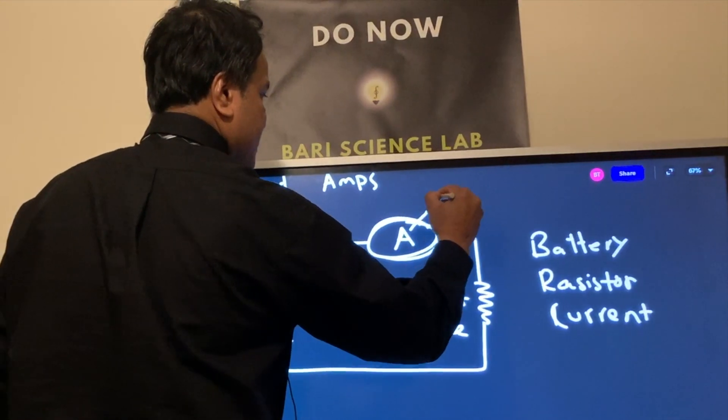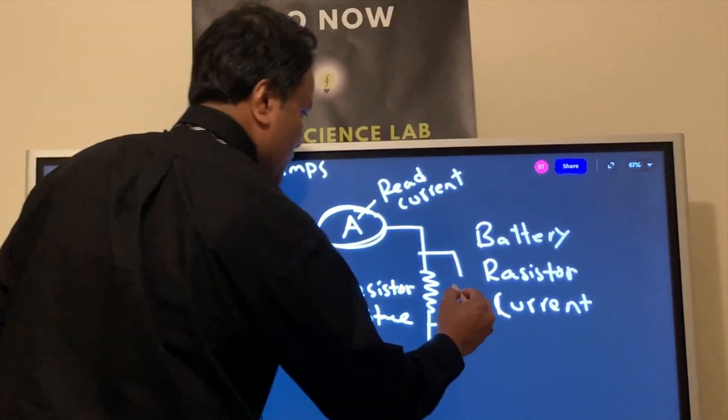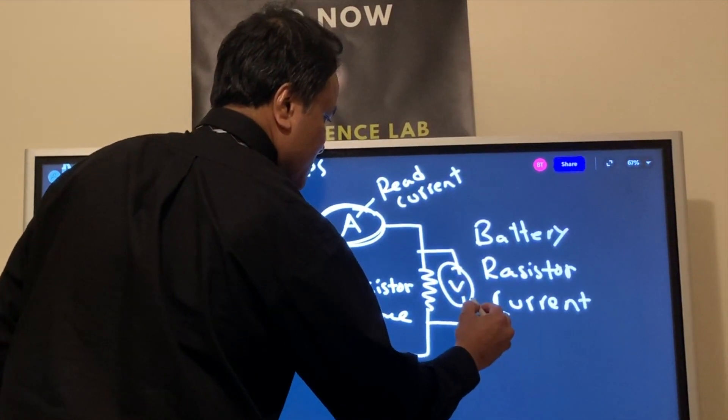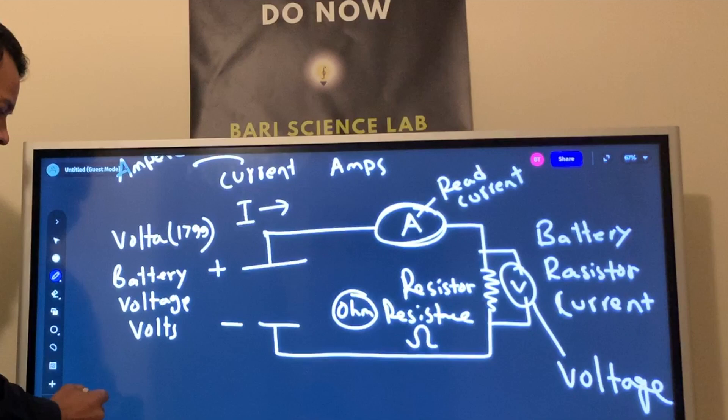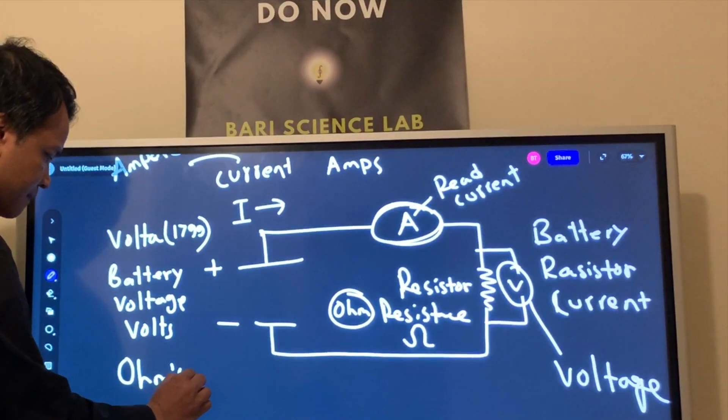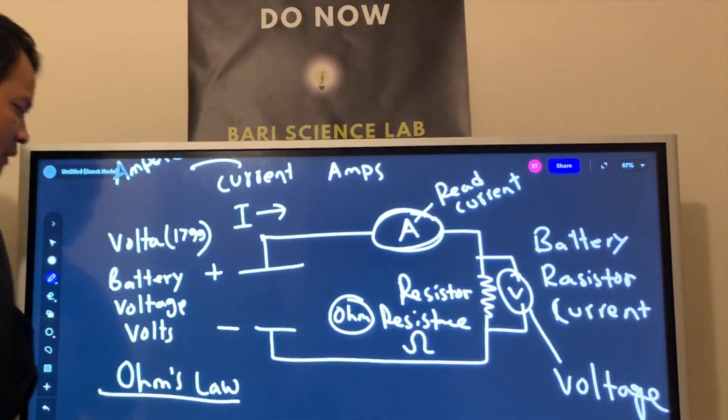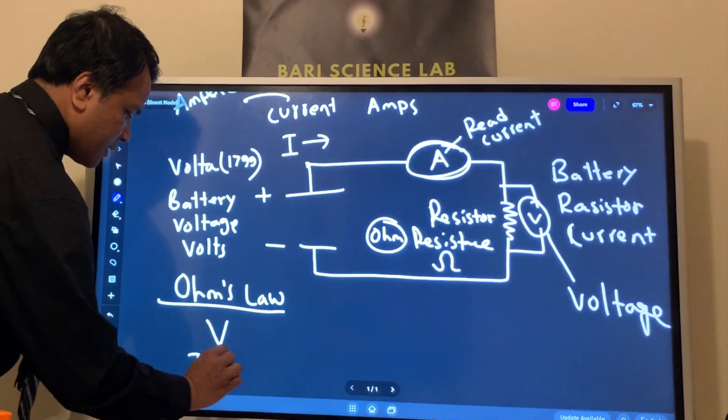Ammeter reads the current. Voltmeter measures the voltage. So we're going to turn it to an equation. The equation would be Ohm's law: V, I, and R.